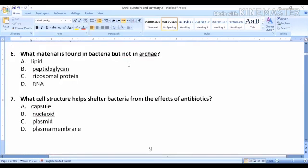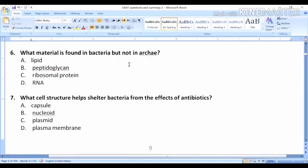Question six: What material is found in bacteria, but not in archaea? Bacteria and archaea both have cell walls, but bacteria have cell walls with peptidoglycan. Peptidoglycan is a complex of nitrogen and a carbohydrate, while archaea have a cell wall without peptidoglycan. So, this is the answer.